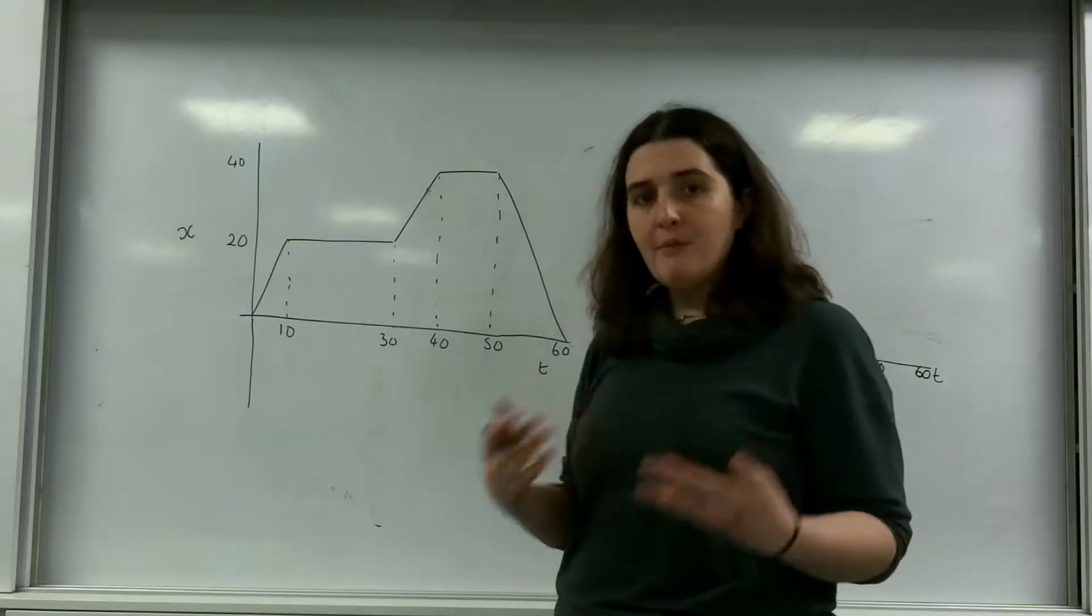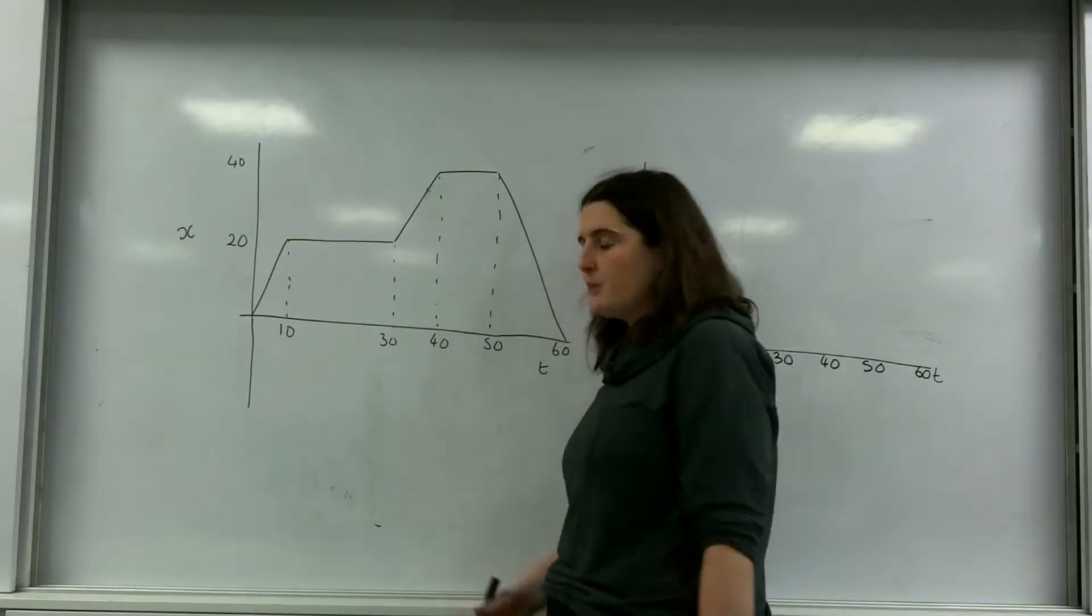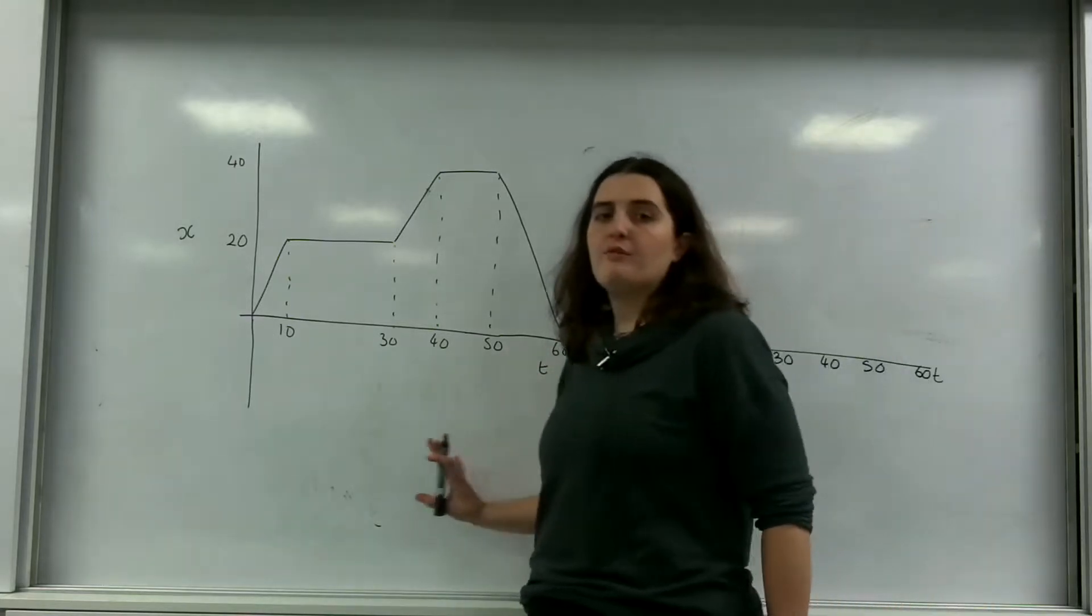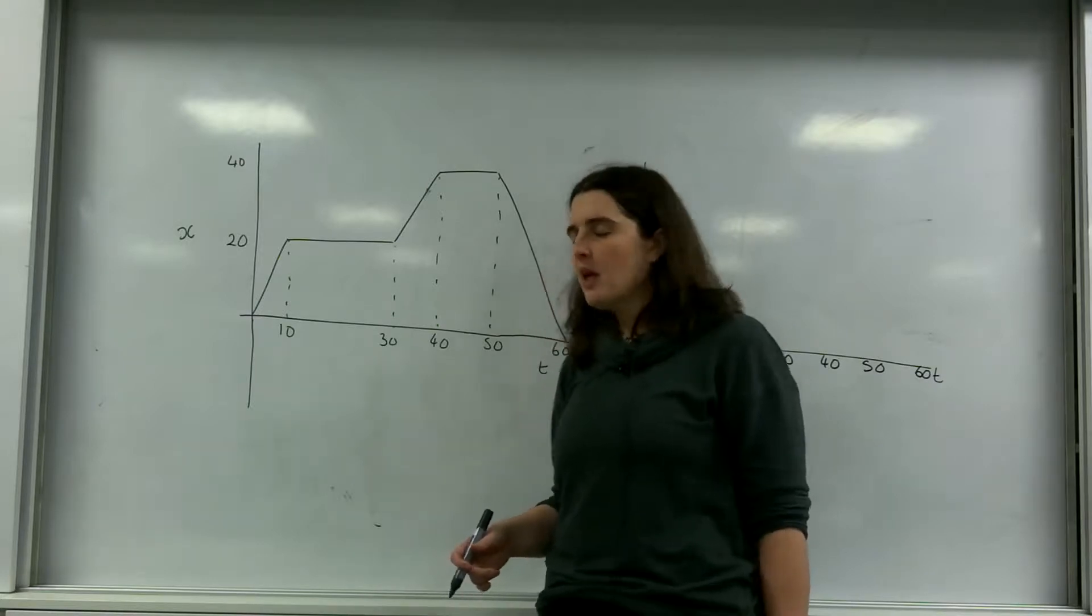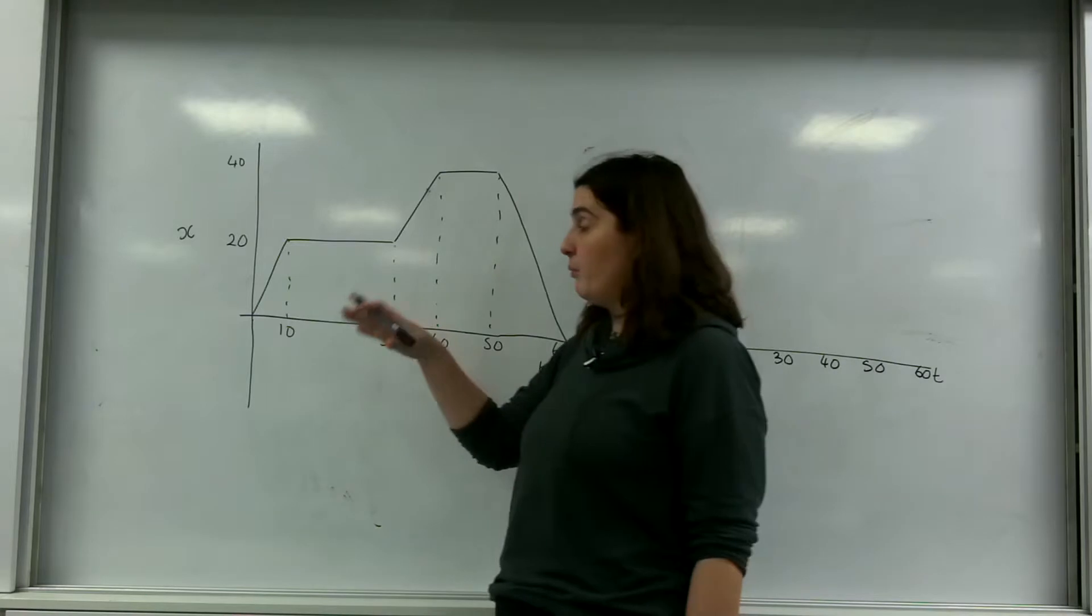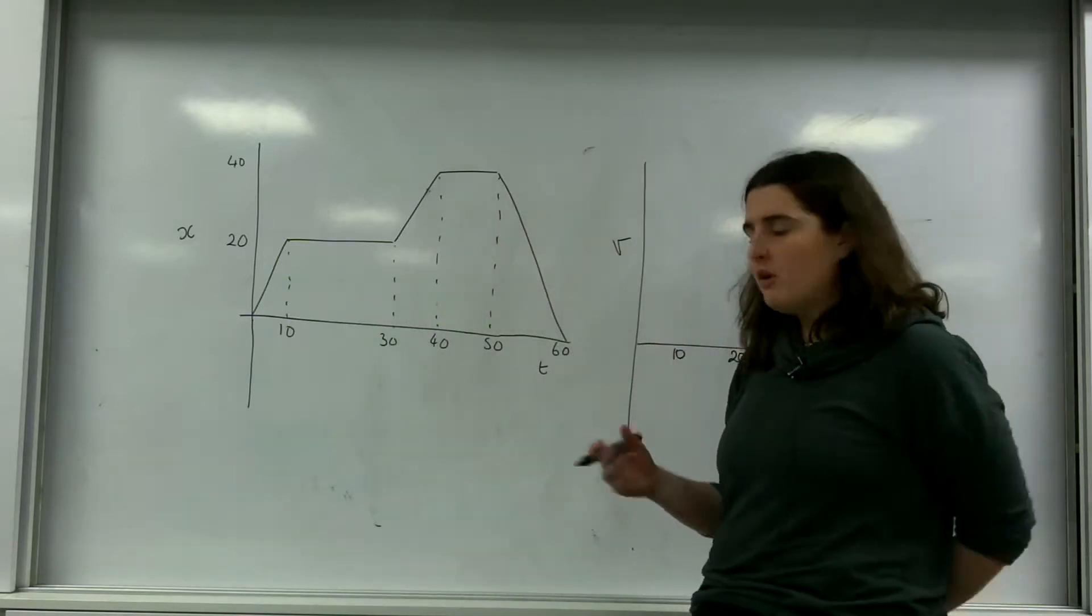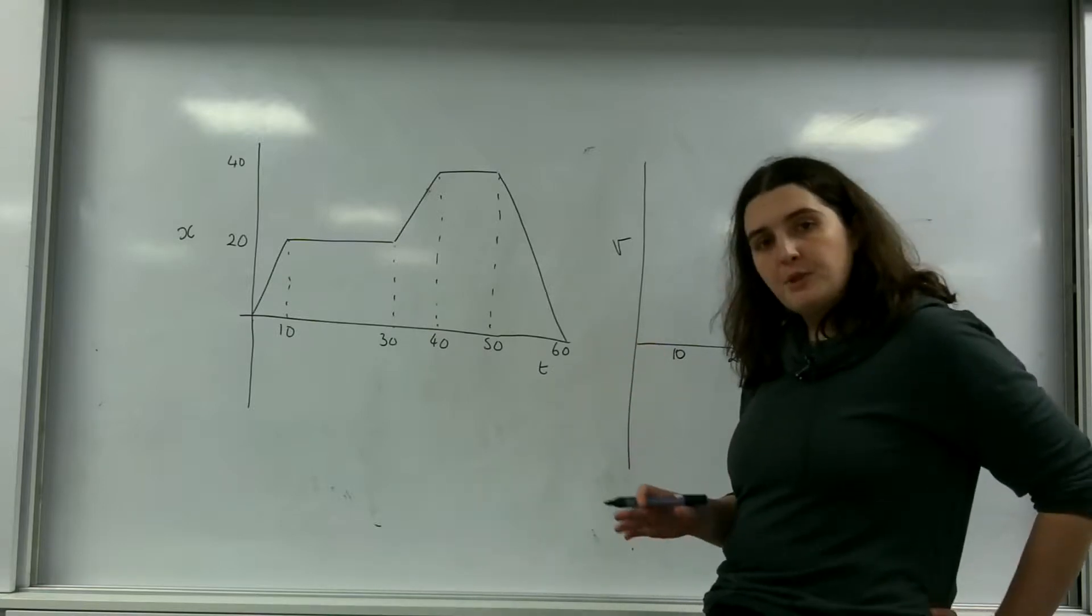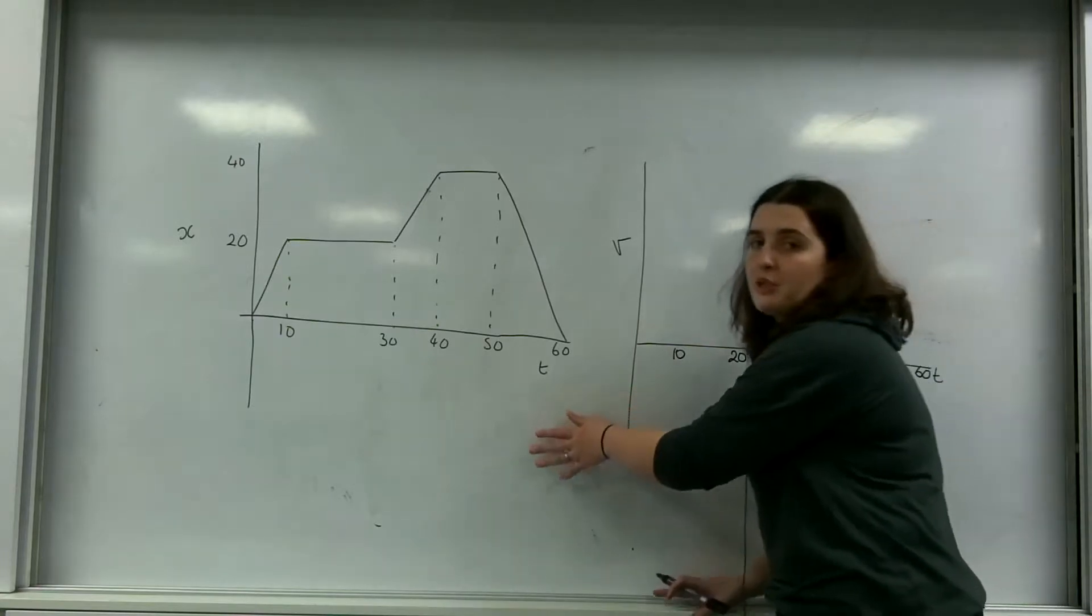Now you can get information from a graph by understanding how displacement and velocity work. So the gradient of this graph represents the velocity of what's going on here. So if I was to draw on this velocity time graph, the gradient between these points I would be able to produce a velocity time graph from the information here.